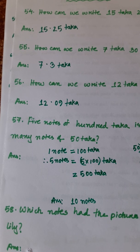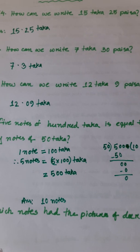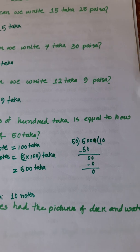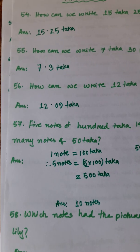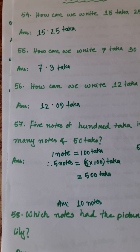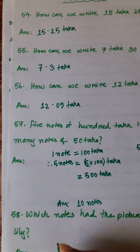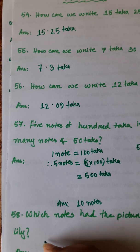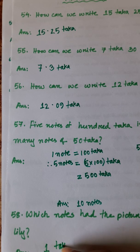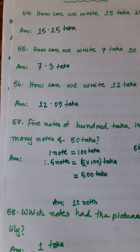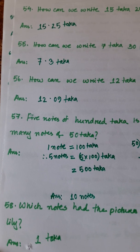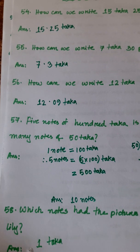Number 58: which notes had the pictures of deer and water lily? The 1 taka note had pictures of deer and water lily.